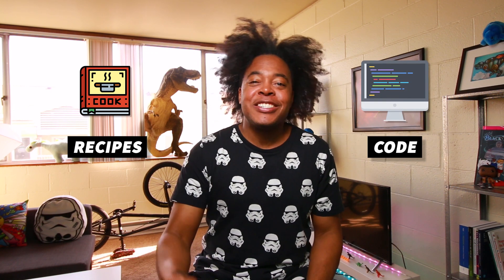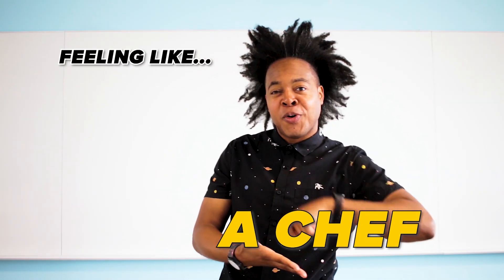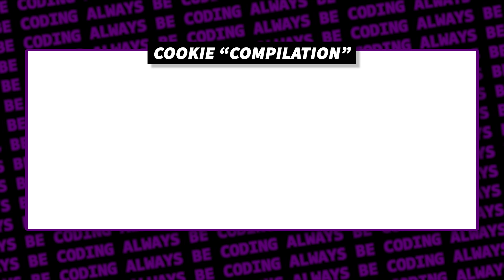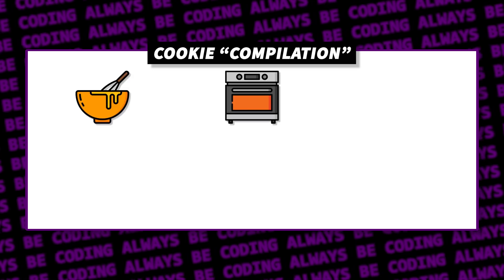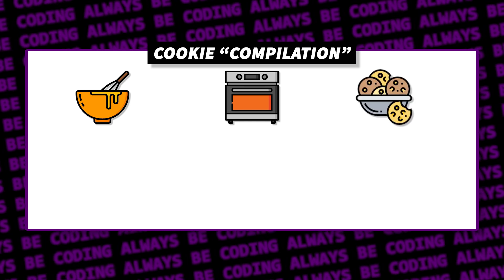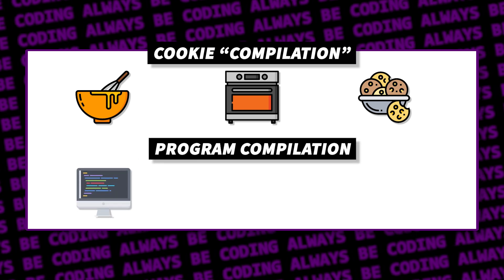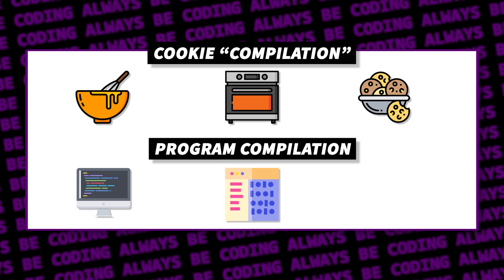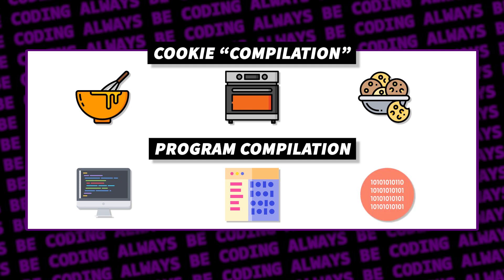You follow the recipe and now you have cookie dough. The next step is to use the oven — in the oven, the cookie dough is transformed, going from dough into warm delicious cookies. Similarly, when you finish writing your program, it's time to compile. In the compilation process, the program you wrote gets transformed from a programming language into binary zeros and ones, which are easily digestible by computers.